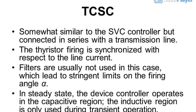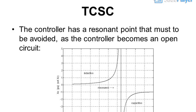TCSC: somewhat similar to the SVC controller but connected in series with a transmission line. The thyristor firing is synchronized with respect to the line current. Filters are usually not used in this case, which leads to stringent limits on the firing angle alpha. In steady state, the device controller operates in the capacitive region; the inductive region is only used during transient operation.